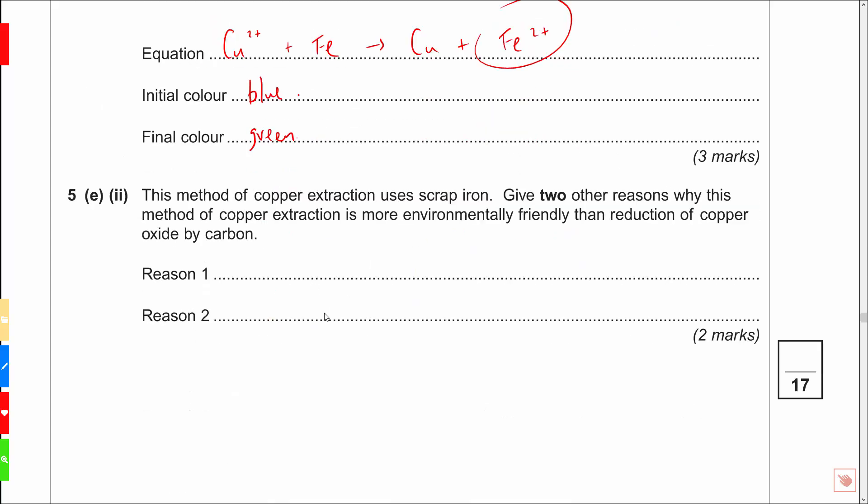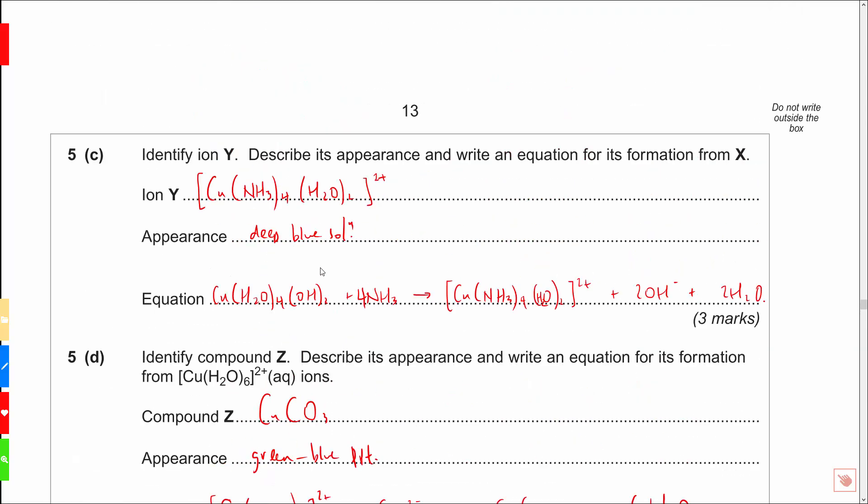Finally, I like this, metal extraction isn't covered anymore, but I kind of like the idea of what's going on here. Maybe they wouldn't ask you it, but anyway, copper extraction uses scrap iron. Give two other reasons why this method of copper extraction is more environmentally friendly than the reduction of copper oxide by carbon. Well, back in the old days, if you're using copper oxide and you're using carbon, you've got to put loads of heat in, so therefore less energy would be used using scrap iron. And also the old method involved carbon dioxide being produced, which is obviously not great for climate change. So less energy used, less carbon dioxide produced. I'm not entirely convinced that kind of question would ever come up again. This one, maybe. The rest of them, absolutely certainly.